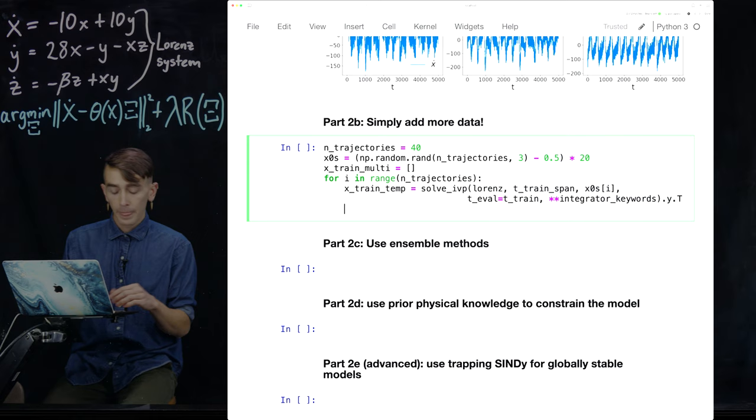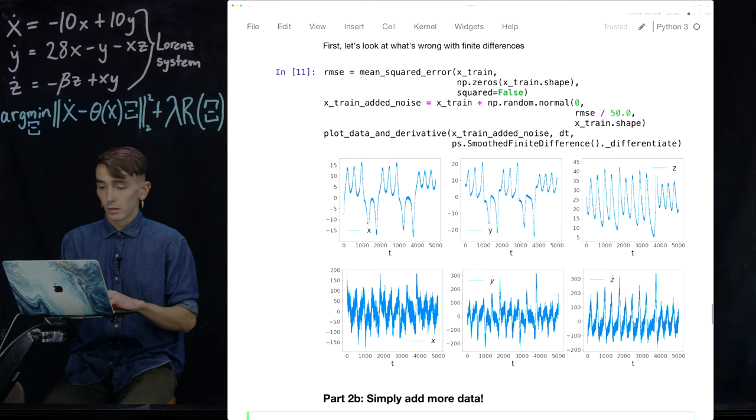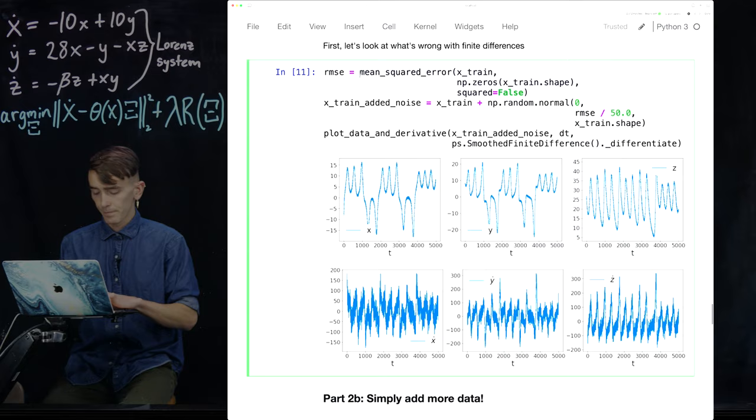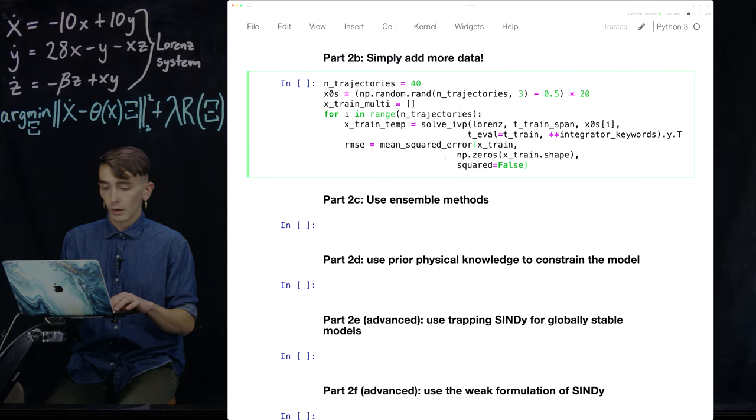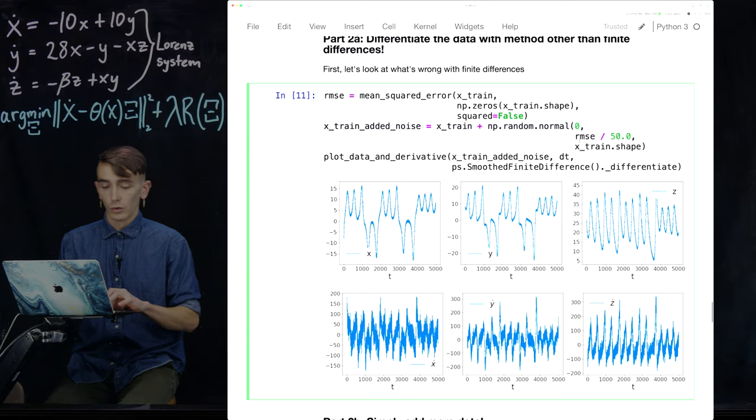Then we're going to just add some error again. So let's just copy and paste that over if I can on this laptop. Great. So we get the mean squared error and once again, we're going to define this added noise here.